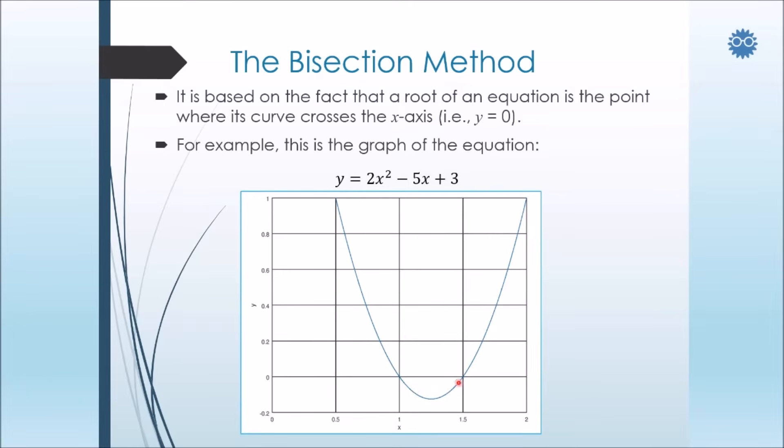On the other hand, for the second root, the values of y before the root are negative, and after the root are positive. So we can conclude that we can find the root if we detect the region where y changes its sign from positive to negative or negative to positive.